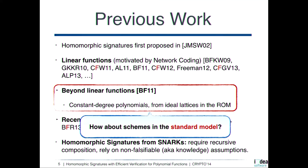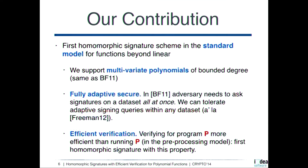Our starting point was the scheme by Boneh and Freeman supporting constant-degree polynomials. We asked whether it is possible to have schemes for more than linear functions proven secure in the standard model. That is one of our main contributions: we propose the first homomorphic signature proven secure in the standard model for functions more expressive than linear functions.